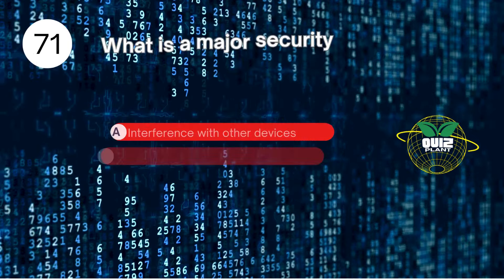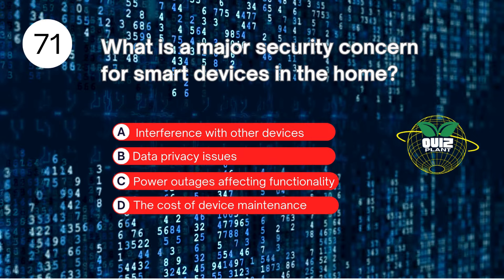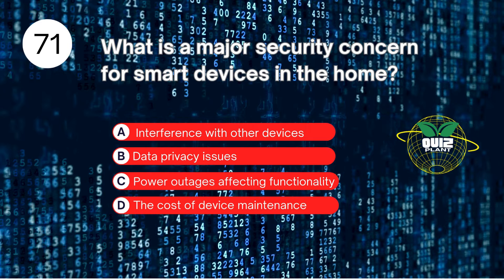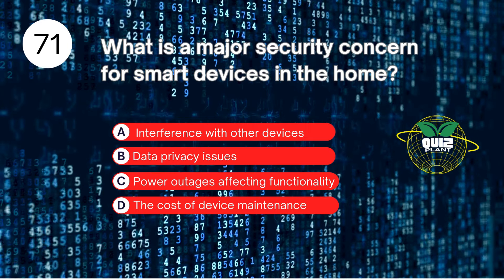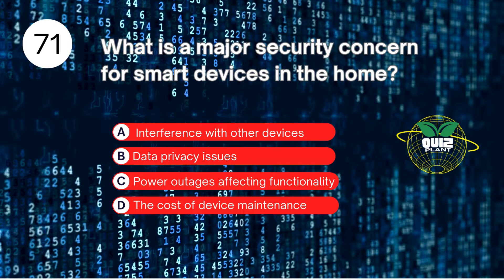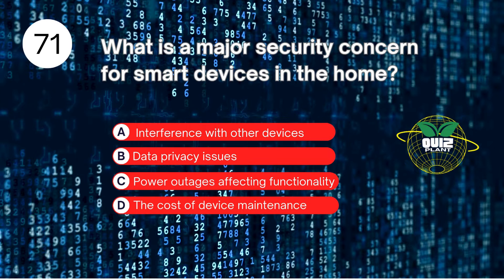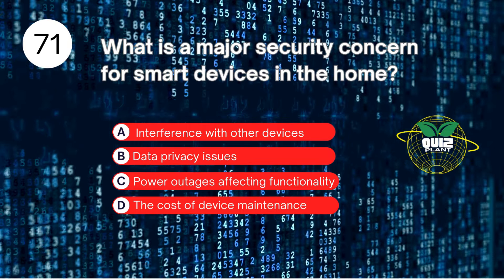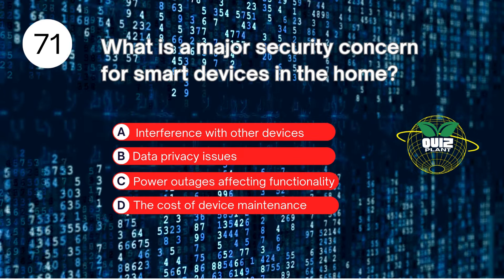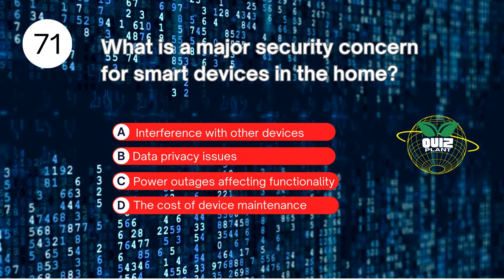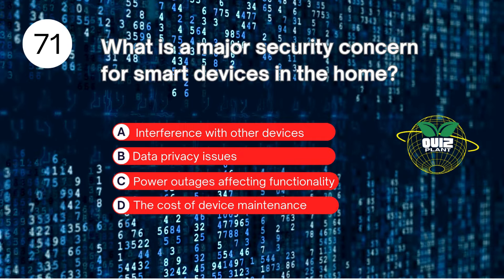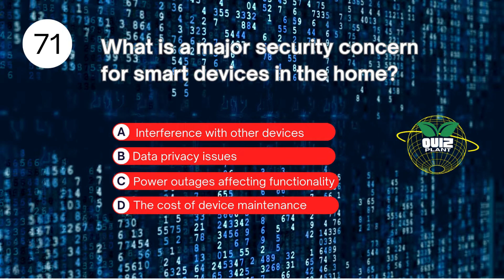Number 71. What is a major security concern for smart devices in the home? A. Interference with other devices. B. Data privacy issues. C. Power outages affecting functionality. D. The cost of device maintenance. The answer is B. Data privacy issues.